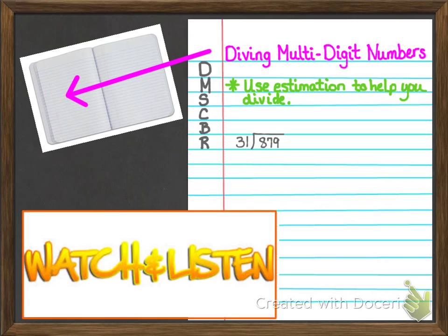Looking at the example I have written here — 879 divided by 31 — in my head I'm thinking 31 is close to 30, and 879 is kind of close to 900. So I think, how many times does 3 go into 9? That helps me get a starting point. 3 goes into 9 three times. Now I know I can't use 3 because 879 is not as high as 900, but it does give me a starting point to start with the number 2.